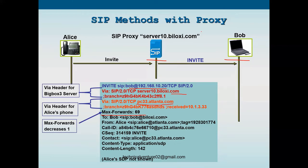If there is another SIP proxy server between this proxy and Bob, then with each additional hop the Max-Forwards decreases by one — 69, then 68, and so on. This means the request can traverse a maximum of 70 hops total before being discarded.